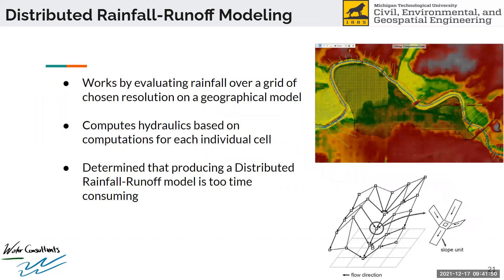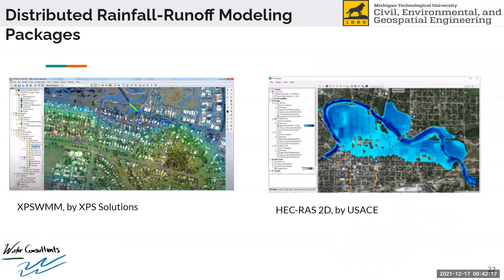We also looked into completing a distributed rainfall-runoff model to acquire additional flow rates. This works by evaluating a rainfall grid over a geographical model instead of looking at the watershed and storm as a whole. We ultimately determined this would be too time-consuming and also difficult to acquire a design storm for, so we did not proceed with it. However, we did look into some software packages for future reference: HEC-RAS 2D by the U.S. Army Corps of Engineers, which is supposed to be very user-friendly, and XPS WMM by XPS Solutions.